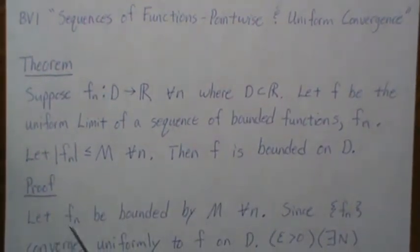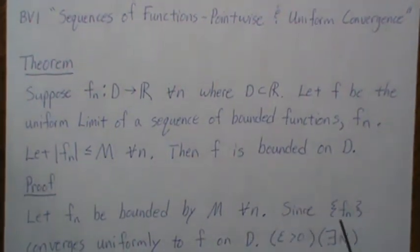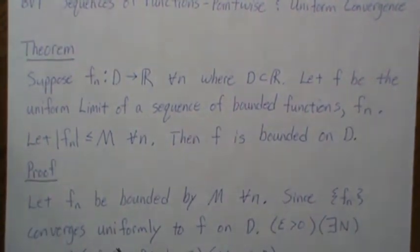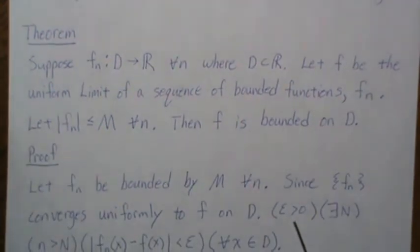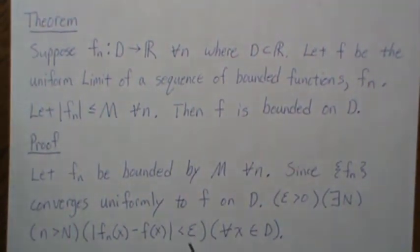Here's a quick proof. Let f_n be bounded by M for all n. Since the sequence f_n converges uniformly to f on D, that means given epsilon greater than zero, there exists an N such that n greater than N, we have that the absolute value of this difference is less than epsilon. So these sequences of functions are getting really close to f(x), and this is for all x in D.